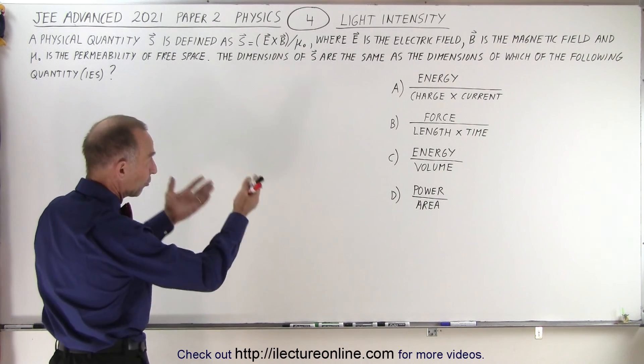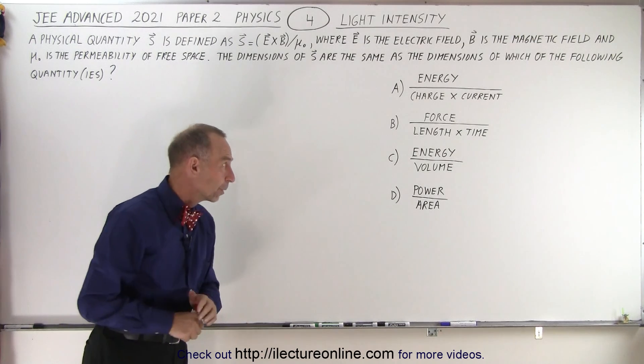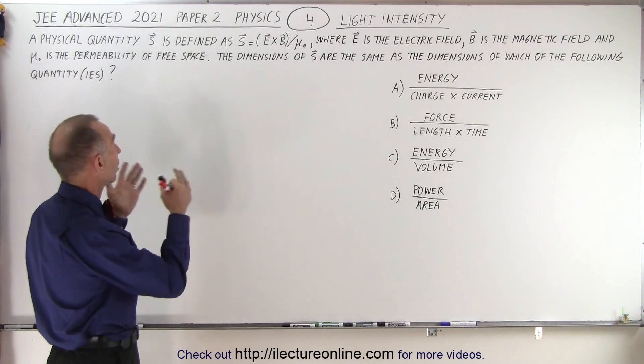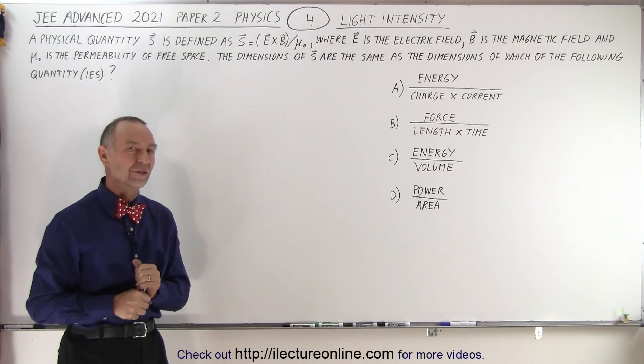The dimensions of S are the same as the dimensions of which of the following quantities? There's four possible combinations that may be equal to the units belonging to this S vector.